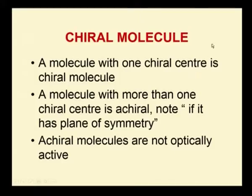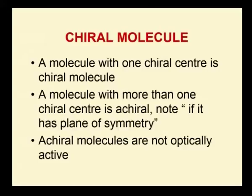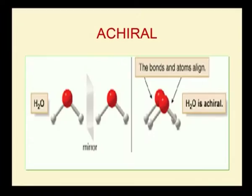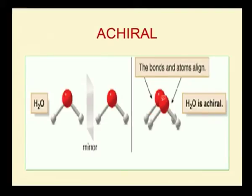A molecule with one chiral centre is chiral. A molecule with more than one chiral centre may be achiral — note whether it has a plane of symmetry. Achiral molecules are not optically active, which means they cannot rotate plane polarized light in equal magnitude and in opposite directions. For example, water: oxygen linked with two hydrogen atoms. If we place both molecules together, the bonds and atoms align, so water is an achiral molecule.